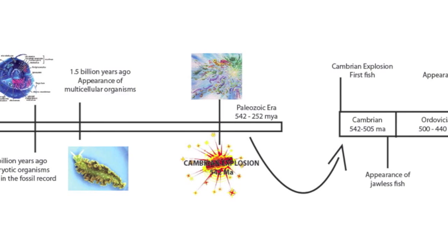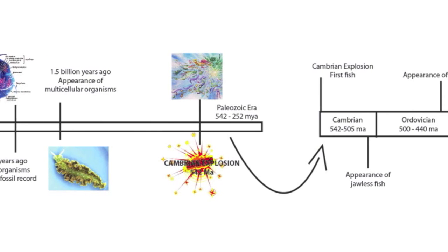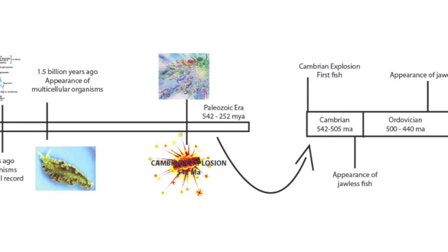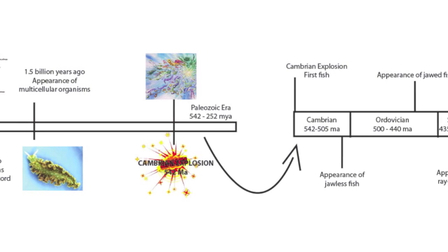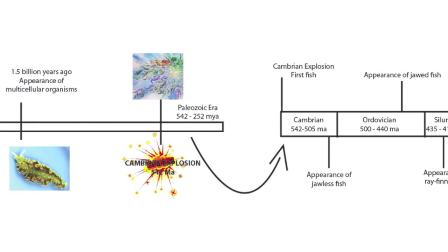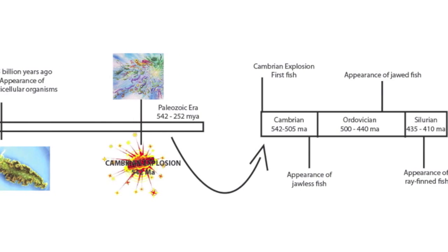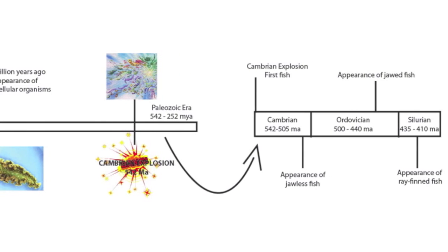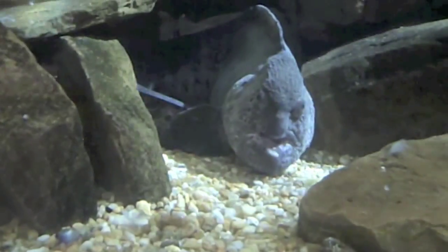The first jawed fish appeared in the late Ordovician period. These radiated into several different groups, one being the ray-finned fish. The earliest ray-finned fish appeared in the Silurian period around 420 million years ago. Think of a fish — the fish you're thinking of is most likely a ray-finned fish.